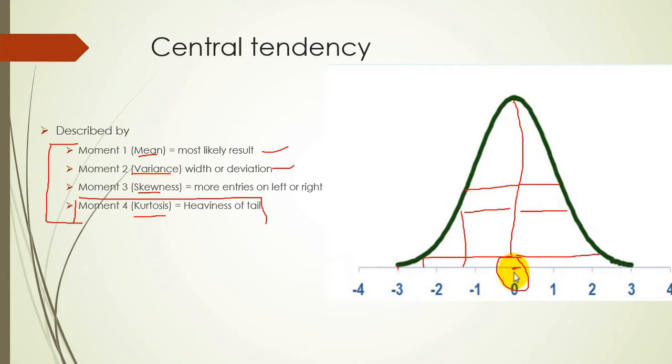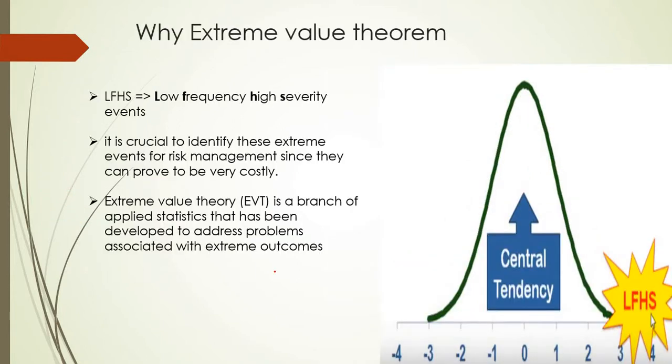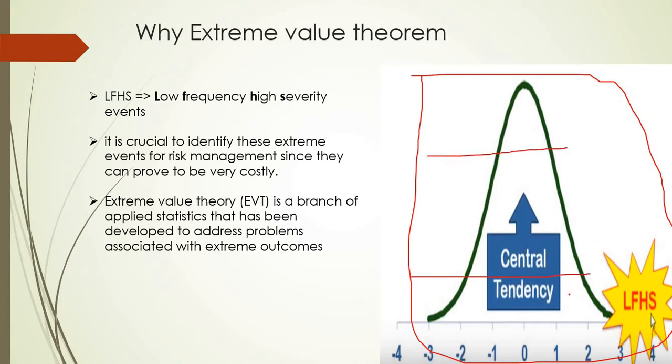Then there's kurtosis. This is where Extreme Value Theorem comes into picture. The fourth moment describes the heaviness of the tail or how many values are present in the tail.